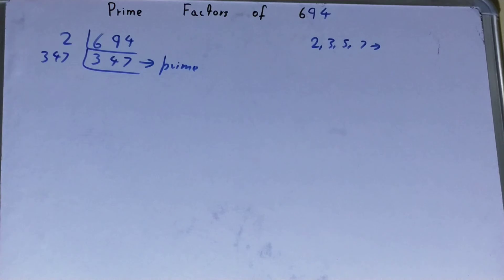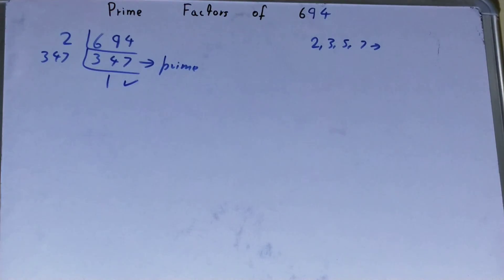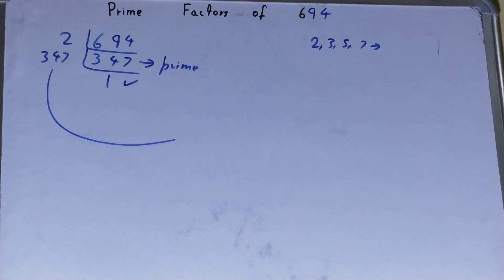And when you do so, you'll be left with 1. And once you're left with 1, the work is done. And whatever you have on the left hand side will be the prime factors of the number 694.